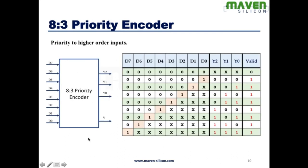There will be a valid output indicator. For example, with eight inputs, three outputs, and one valid indicator: if none of the inputs are active high, the valid output is zero. Based on the inputs, you get the equivalent binary — for D0 you get 0,0,0; for D1 you get 0,0,1. This shows the priority: when D7 is active high, it does not consider any other inputs. Irrespective of other inputs, it always considers D7 because D7 has the highest priority. That's why for other inputs, a don't-care condition is used.